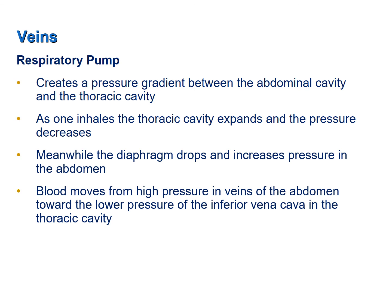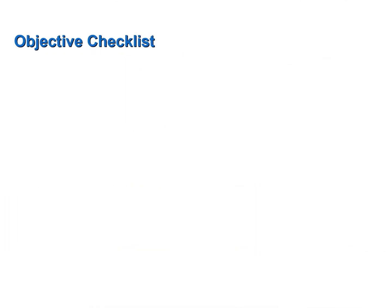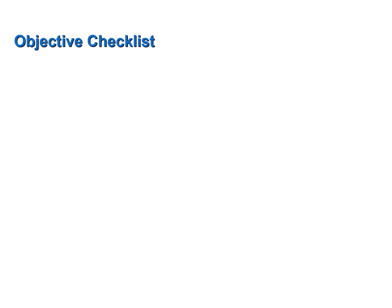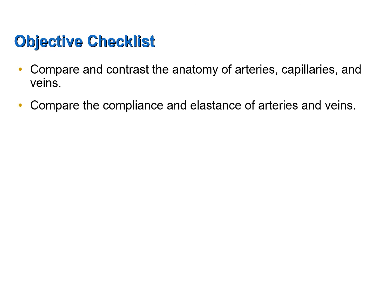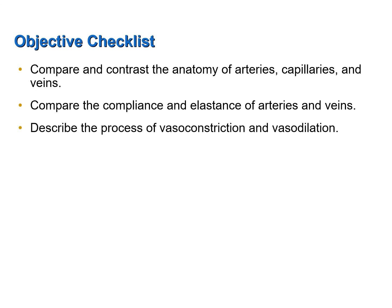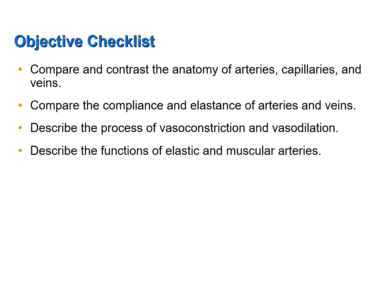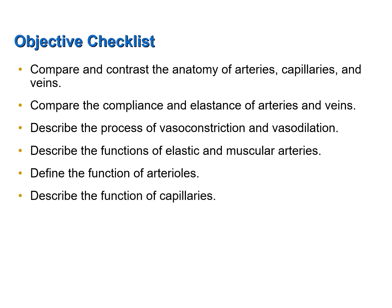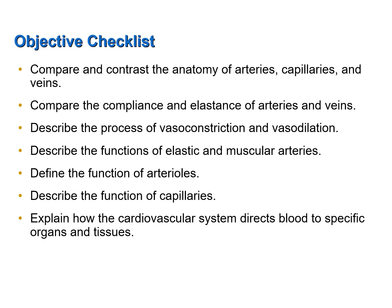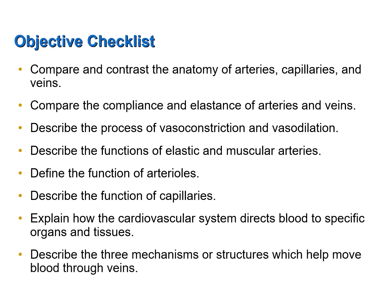Now let's review the objectives of this screencast. Compare and contrast the anatomy of arteries, capillaries, and veins. Compare the compliance and elastance of arteries and veins. Describe the process of vasoconstriction and vasodilation. Describe the functions of elastic and muscular arteries. Define the function of arterioles. Describe the function of capillaries. Explain how the cardiovascular system directs blood to specific organs and tissues. And lastly, describe the three mechanisms or structures which help move blood through veins.